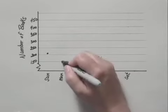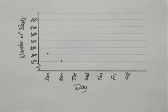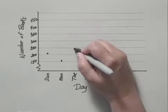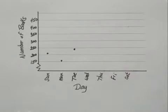Monday there were 160. Tuesday there were 240, a little below the 250 line. Wednesday there were 270.